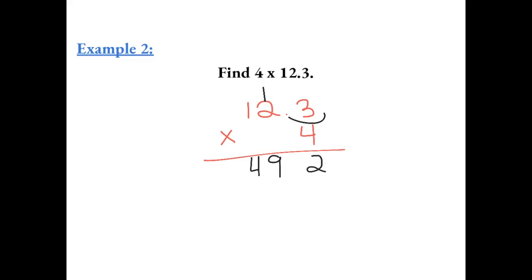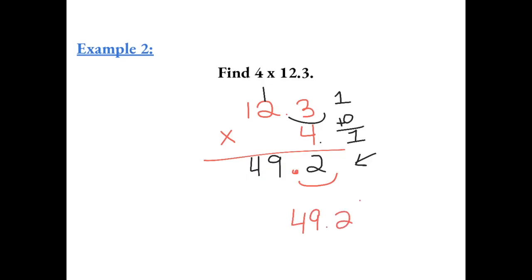There's one number behind the decimal here, and there are zero numbers behind the decimal in 4. So that means our answer should have one number behind the decimal. I'm going to move the decimal over one place, and our final answer is 49.2.